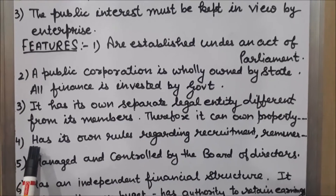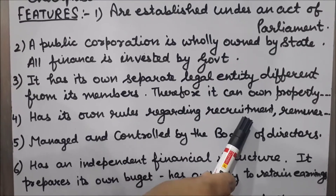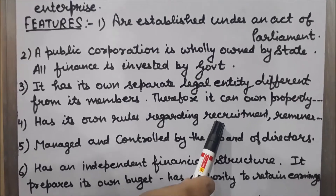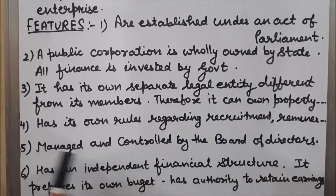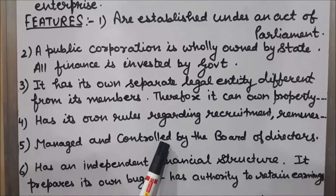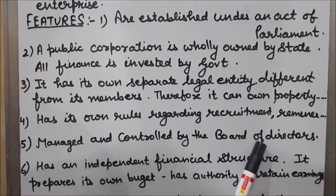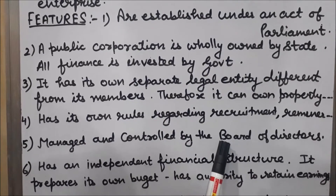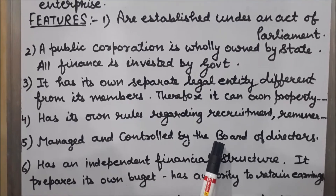The fourth feature is that statutory corporations have their own rules regarding recruitment and appointment of employees, as well as their remuneration — that is, salaries. The fifth feature is that public corporations are managed and controlled by a board of directors, who are nominated by the government. The board of directors manages and controls the statutory corporations, and the government has no interference in the day-to-day working of statutory corporations.